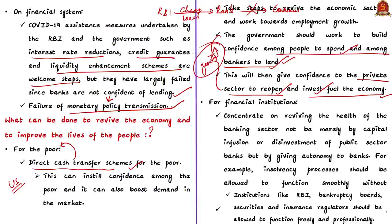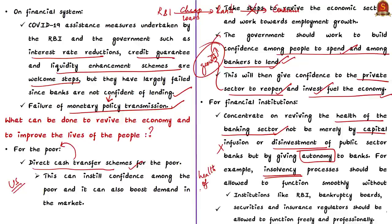Regarding financial institutions, the authors opine that the government should primarily concentrate on reviving the health of the banking sector. Capital infusion to banks or disinvestment of public sector banks alone won't help revive the economy. The government should give more autonomy to banks and banking bodies, as the government often interferes in insolvency processes, affecting the health of banks. By giving more autonomy to RBI as well as banks, lending will improve.